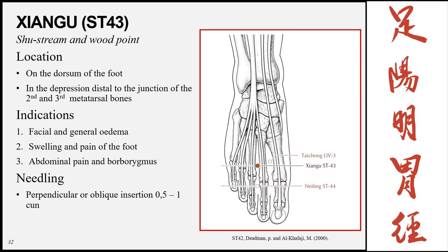Xiangu, Stomach 43, is the shu-stream and wood point of the meridian, on the dorsum of the foot in the depression distal to the junction of the second and third metatarsal bones. Locate the junction where these two bones touch, then palpate distally for the depression. Indications: facial and general edema, swelling and pain of the foot, abdominal pain, and borborygmus. Insertion is perpendicular or oblique, 0.5 to 1 cun.